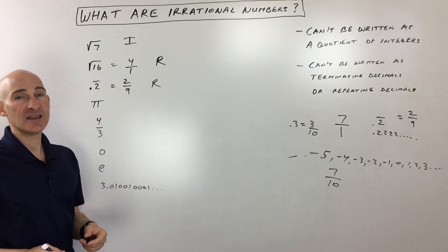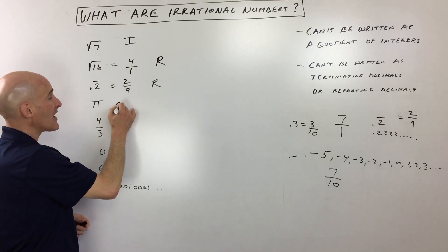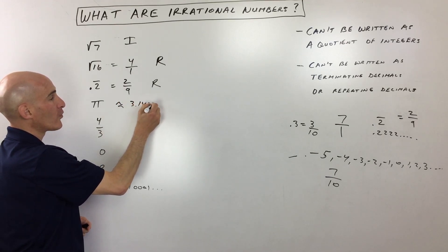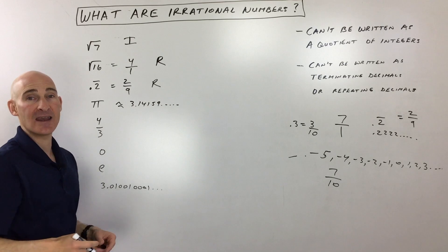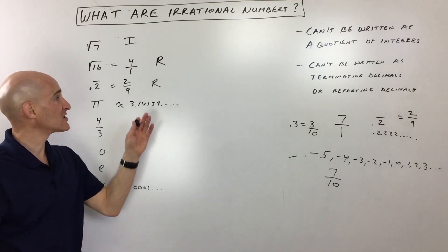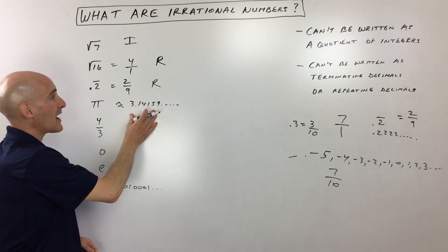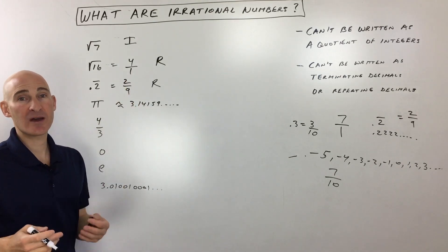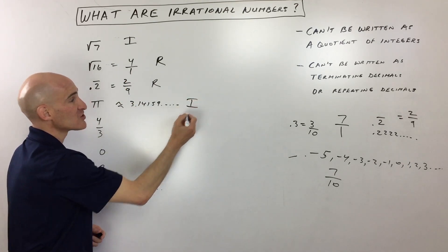Pi, on the other hand, is approximately, right, 3.14159, dot dot dot. Now, it doesn't repeat, and it doesn't terminate or stop. And so this cannot be written as a ratio of an integer divided by an integer, so this is an irrational number.